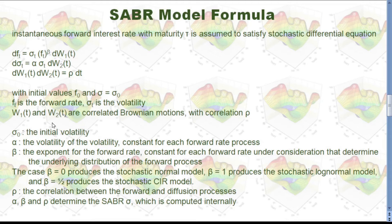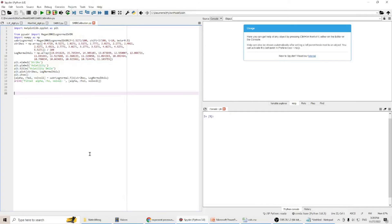Now let's go to Python and see how we can calibrate SABR model. The calibration of SABR model is quite straightforward. There is a package called pySABR, and there are two functions in this package: one for the lognormal model, another for the normal model. In this video, I'm going to use lognormal model first.